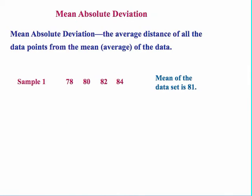Mean absolute deviation. It sounds complicated, but it really is a pretty simple concept. It's simply the average distance of all the data points from the mean or average of the data. So let's look at this sample. You have four data points. Maybe these are test grades, maybe the high temperatures of the last four days. It could fit a lot of different contexts.